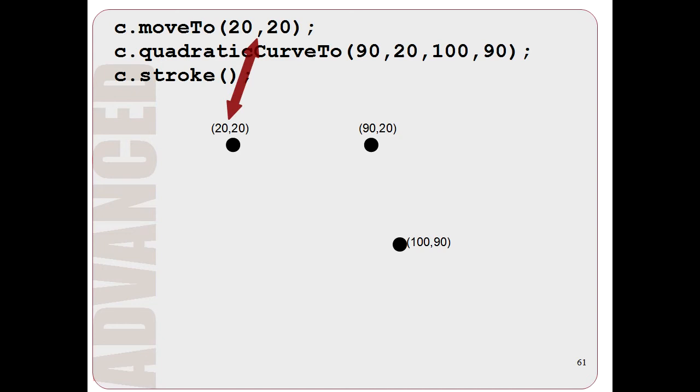Then, you use this quadraticCurveTo command and give two sets of positions. The first two numbers refers to this point here, 90,20. And then, the next set of two numbers refers to the last point, 100,90.